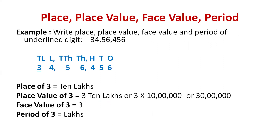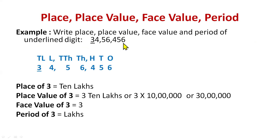Now let's understand place, place value, face value and period with an example. First step: write the place value chart — this applies to every question. The example asks: write the place, place value, face value and period of the underlined digit. The underlined digit is three. Start writing places from the right side digit, which is six: ones, tens, hundred, thousand, ten thousand, lakh, ten lakh.